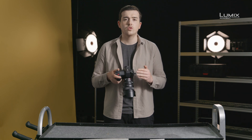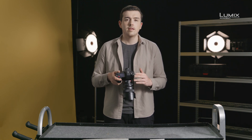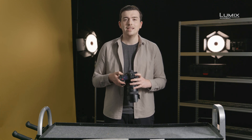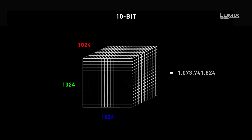But what does 10-bit and 4:2:2 really mean? 10-bit, or the color depth, or bit depth, is a measure of how many individual colors the camera is capable of recording. 8-bit color depth contains 256 individual colors for each of the red, green, and blue channels. 10-bit color, on the other hand, contains 1024 individual colors for each RGB channel. That's 64 times more color information.